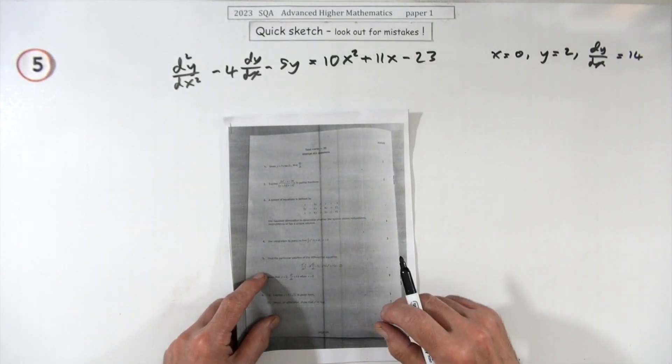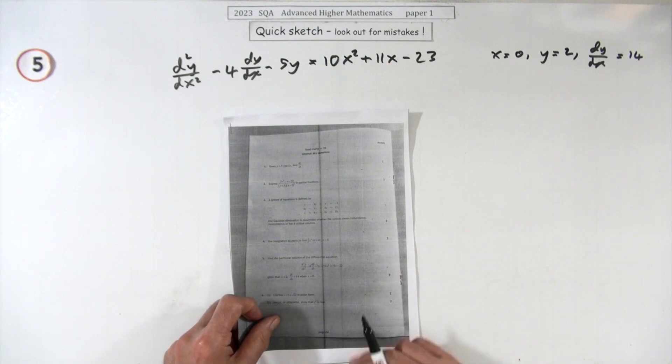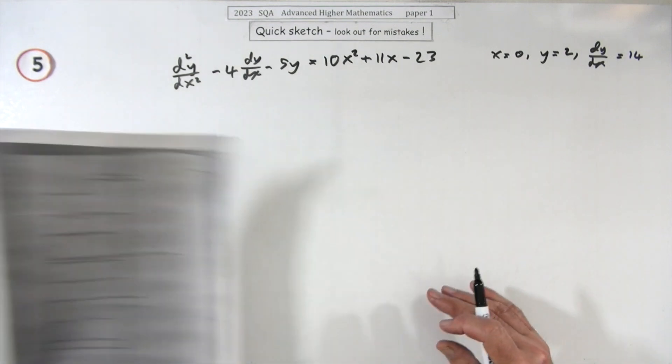Number five from paper one of the 2023 Advanced Higher Maths, a big nine mark question here. Find the particular solution to the second order differential equation.